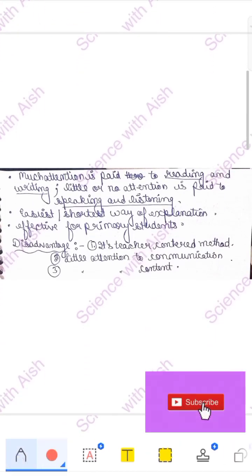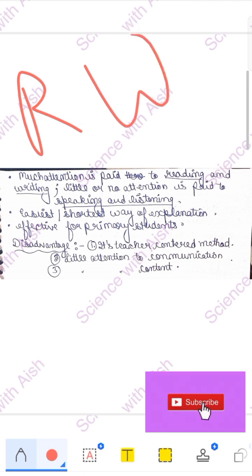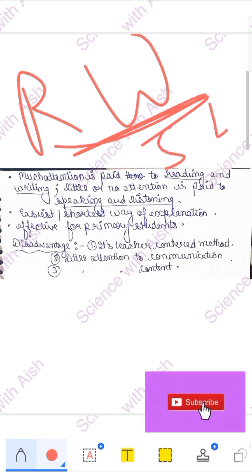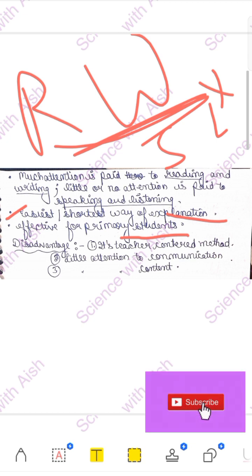In older methods, more attention was given to reading and writing — that the child is reading and writing well. No attention was given to how the child speaks or to listening. The main focus was that the child has read the textbooks and learned to write well. This is called the easiest and shortest way of explanation, because you directly translate into the mother tongue. It is effective and the best method for primary students.